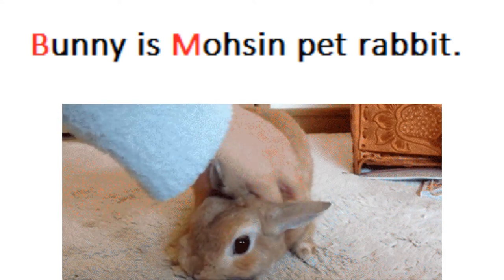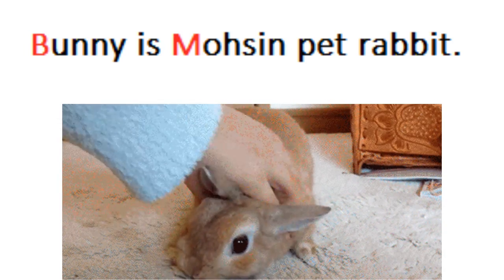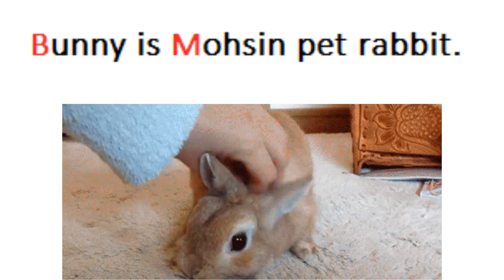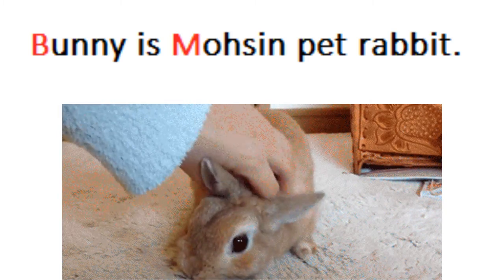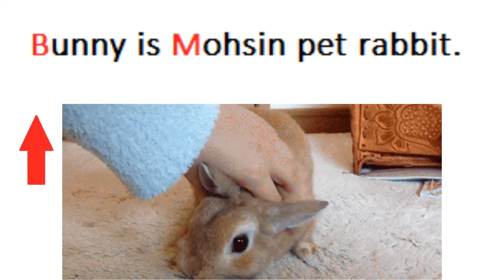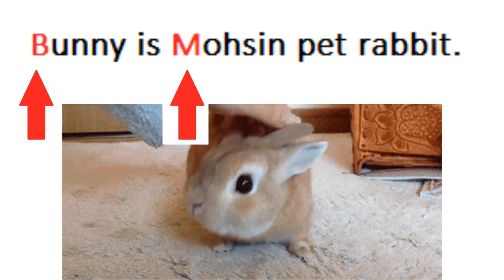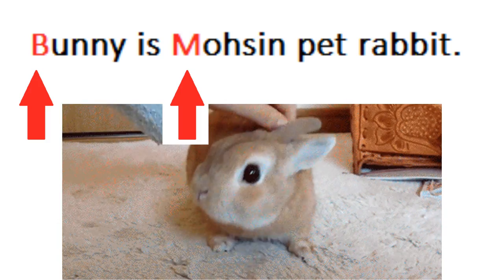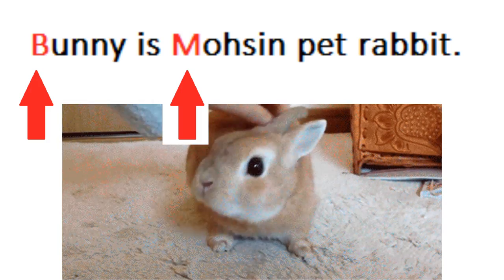फिर है: Bunny is Mohsin's pet rabbit. अब आप देखें कि Bunny जो है वो rabbit का नाम है — rabbit यानी खरगोश — और pet rabbit वो होता है जो घर में पालतू रखा जाता है. तो इसमें Bunny proper noun है, rabbit का नाम है, और Mohsin भी proper noun है. हम इन दोनों को capitalize करेंगे और Bunny से sentence भी start हो रहा है.